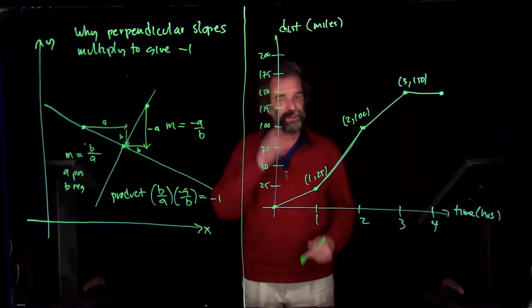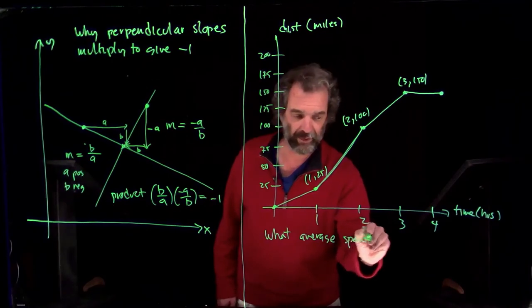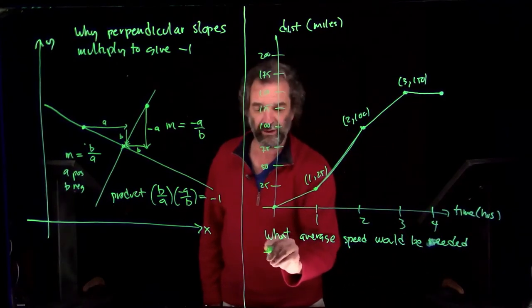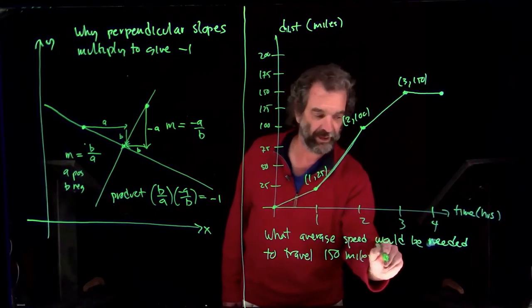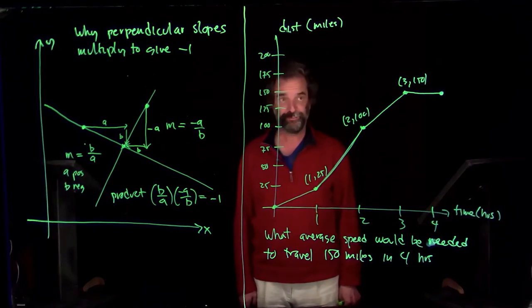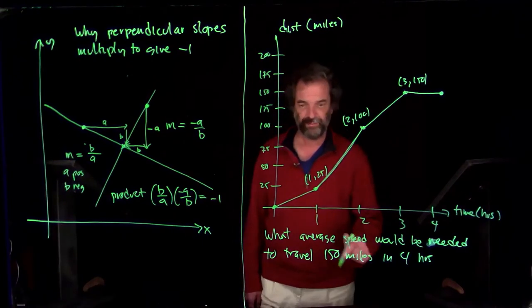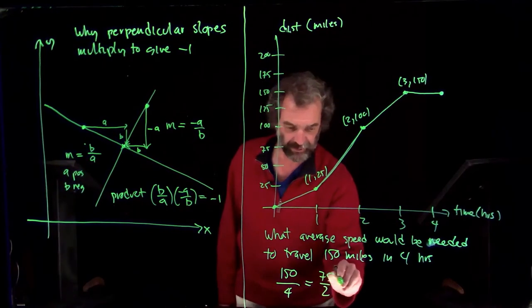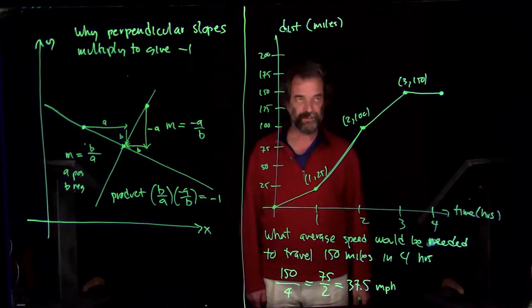And you ask yourself, what average speed would be needed to travel 150 miles in four hours? Well, you probably know how fast you have to go to go 150 miles in four hours. Doesn't seem like we're going very fast. How fast is that? We do 150 miles in four hours. That's 75 in two hours. That's 37.5 miles per hour.